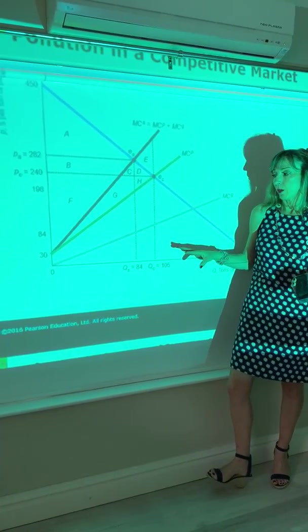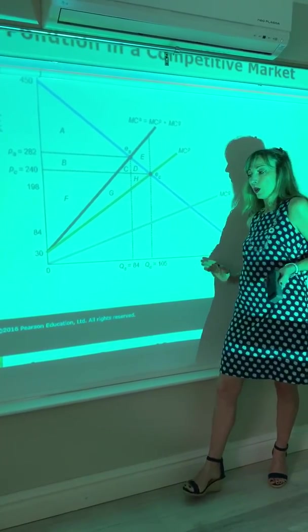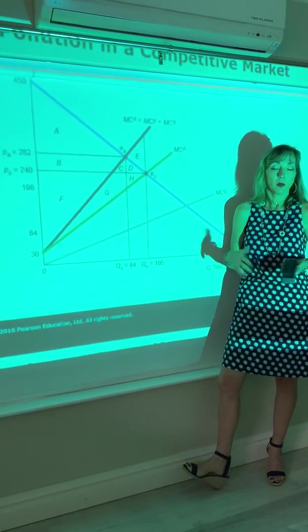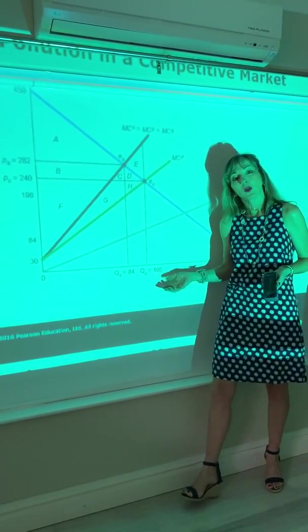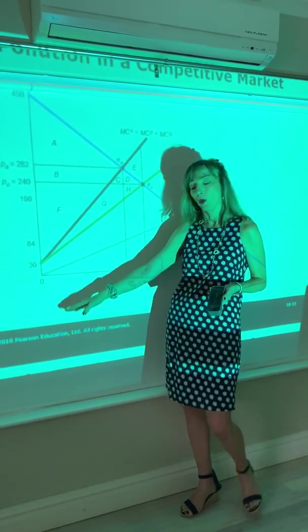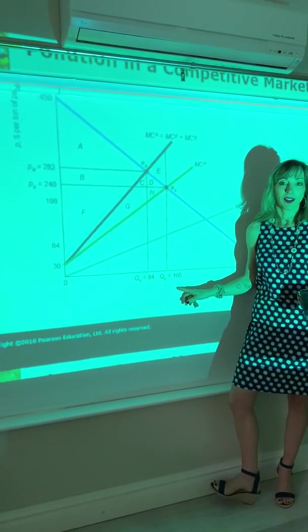We can also see from this that for society, we might argue that we don't want any production of paper because then you'd have no externality, no pollution. But because we value paper, the optimum is not going to be zero production. We always want some amount of production, but too much is also not a good thing.